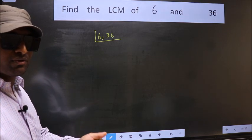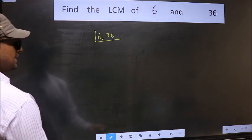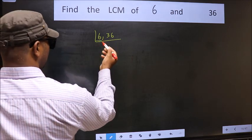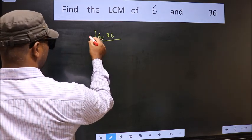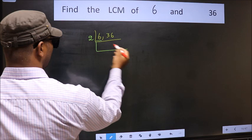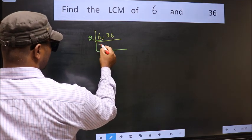Now you should focus on the first number which is 6 here. 6 is even, so take 2. When do we get 6 in 2 table? 2, 3, 6.